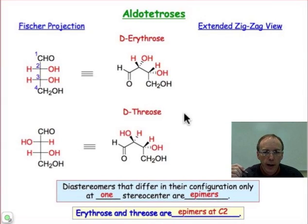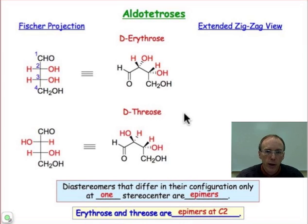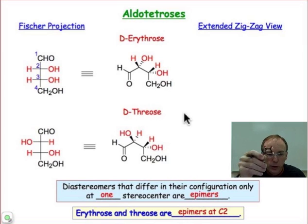Now we're ready to move on to the higher carbon homologues of the monosaccharides, starting with the tetroses. It would be very helpful if you would pause the recorder right here and go ahead and build a molecular model of the tetroses, starting with erythrose.